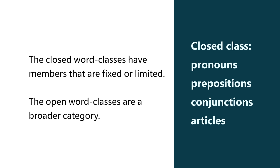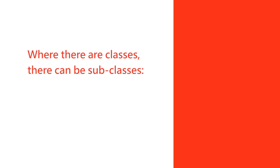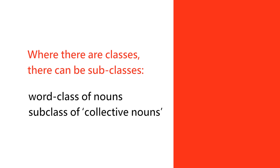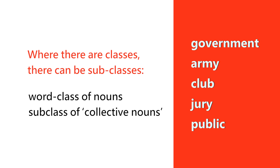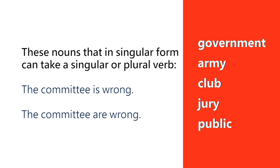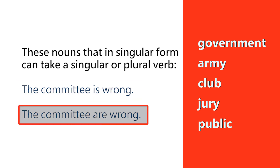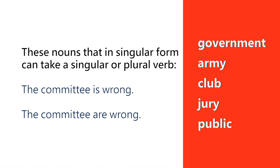When you talk about classes you may also talk about subclasses. For example, nouns are a word class, but within the noun word class you may have subclasses such as collective nouns — words like government, army, club, jury, public. An interesting property of collective nouns is that they may be used with a singular or plural verb even though their form is singular. For example: 'the committee is wrong' or 'the committee are wrong.'